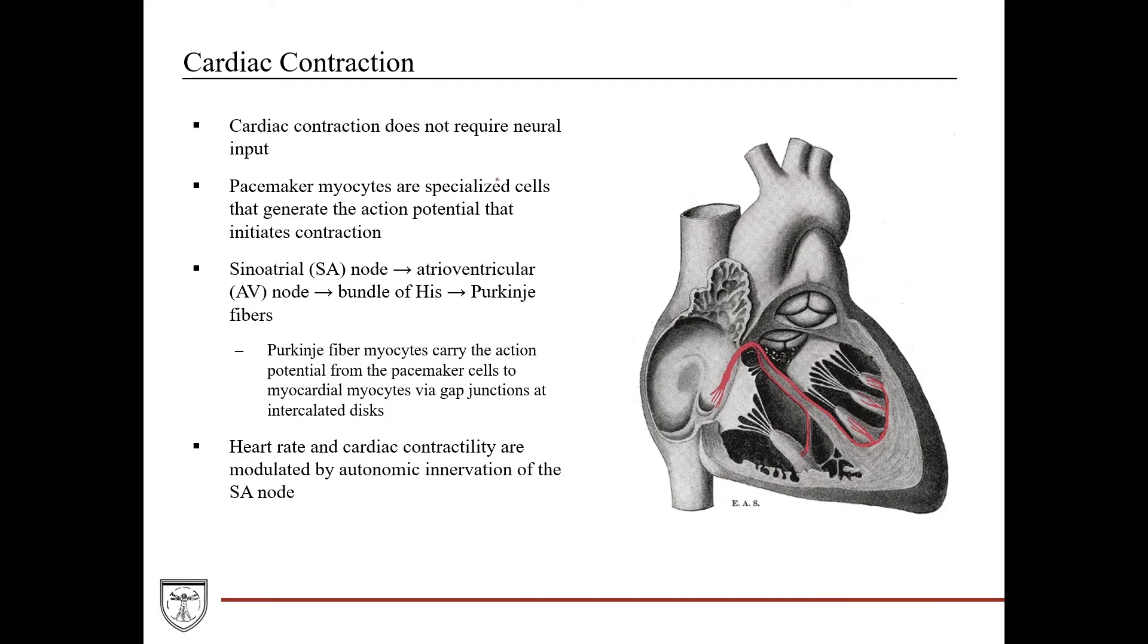Cardiac contraction, like we've said before, does not require neural input. Cardiac contraction is initiated by pacemaker myocytes, which are essentially specialized cells that generate the action potential that initiates contraction. So if you look over here, here's the heart right here. This would be the right atrium and the sequence of cardiac contraction. So it's initiated in the sinoatrial node, which would be the SA node, which is found here in the region of the right atrium. Then these will travel through both atria, the right and the left atrium. And then it'll converge on this section right here. So it'll come back around like this.